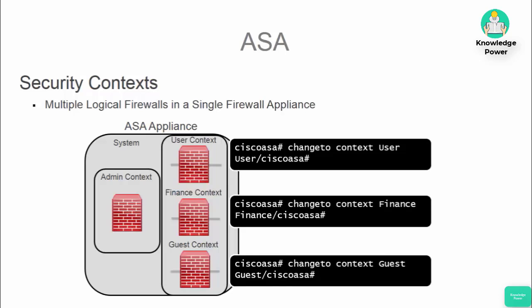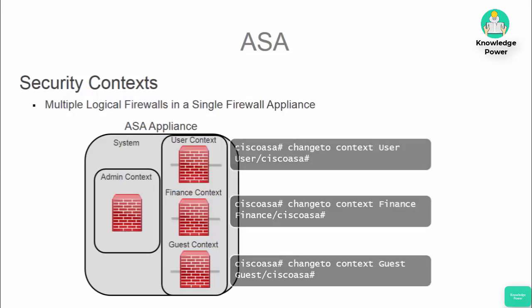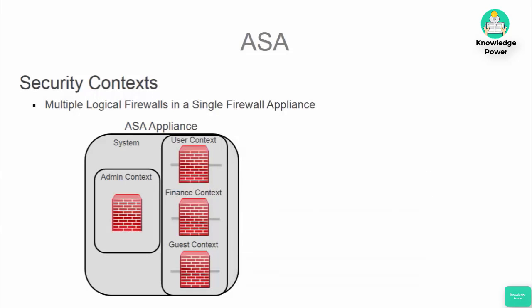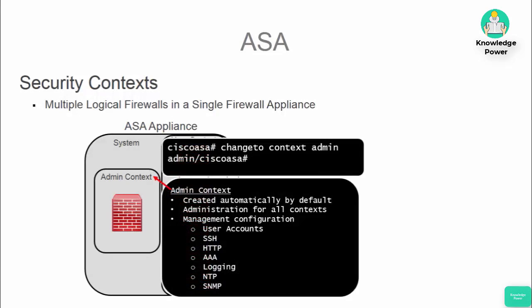For example, if you wanted to add an access list to your finance virtual firewall, you would change to that context's configuration and then configure it just like you would a completely different firewall. In addition to the contexts added within the system configuration, by default an admin context is created.